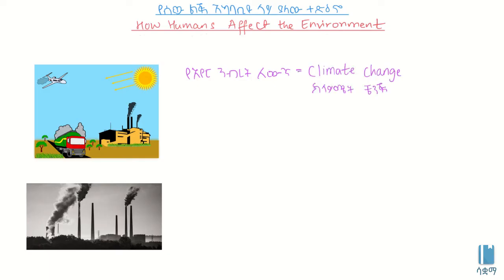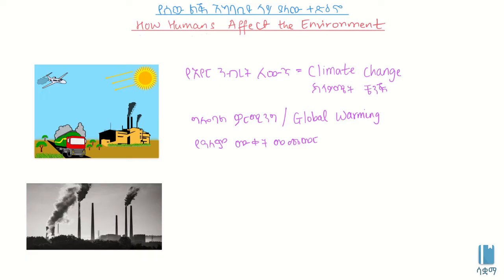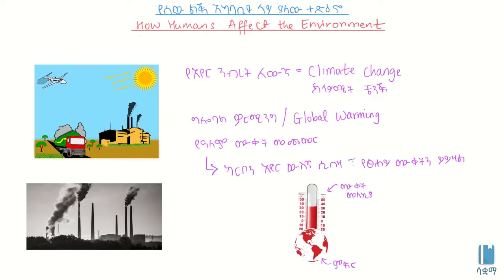Climate change is the same as global warming, and the same as the environment. This method can be used in the process of carbon emissions or carbon. However, it will change in the market; when it becomes a liquid or a very low volume, it can be used — this is a source of carbon emissions instead of water.